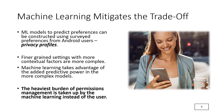This in fact reduces overall user burden. The machine learning can take advantage of these more accurate settings to build models that are better at anticipating people's privacy preferences, and these models can provide recommendations which in turn reduce user burden. Thus, the heaviest burden of permissions management is taken up by the machine learning instead of shifted to the user.